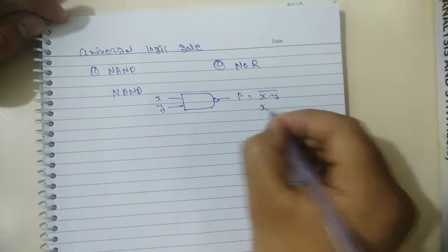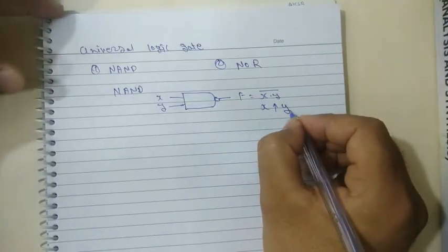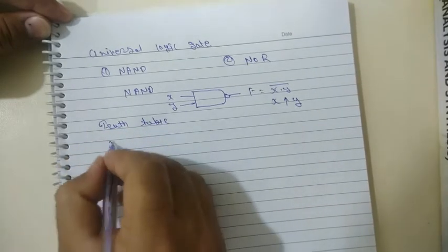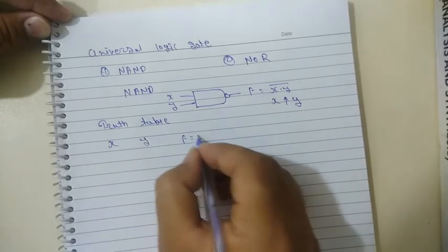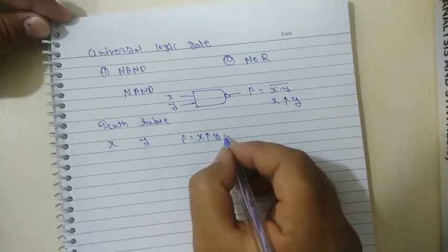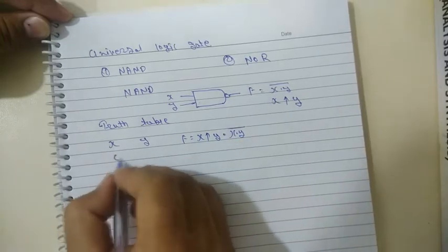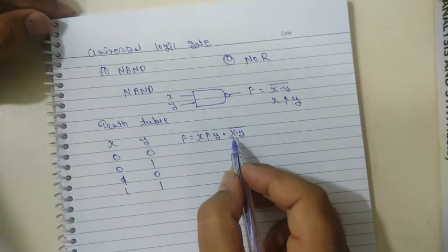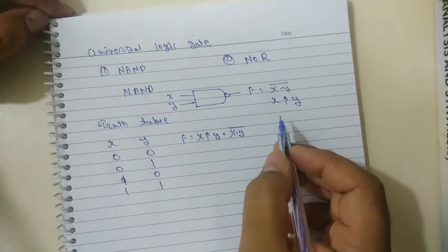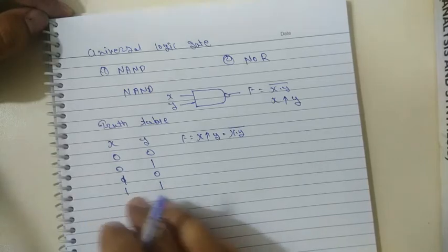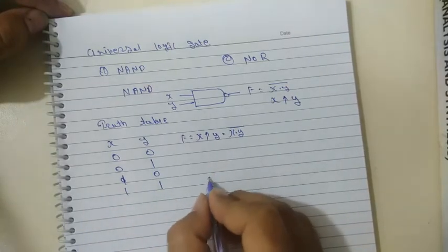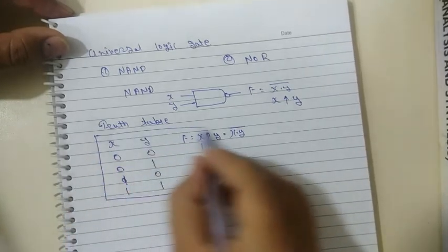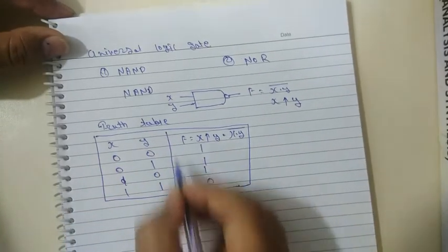So the NAND gate is a combination of an AND gate and a NOT gate. The output is X dot Y bar, or X NAND Y. For the truth table, the output is the complement of the AND gate output. The AND gate output is 1 when both inputs are 1, so here the output will be 0 when both inputs are 1. If any input is 0, the output will be 1.